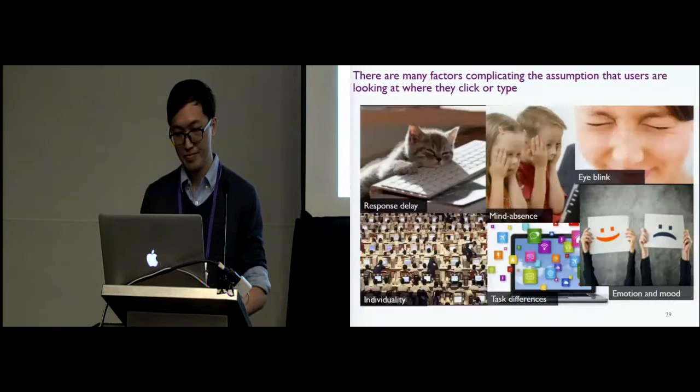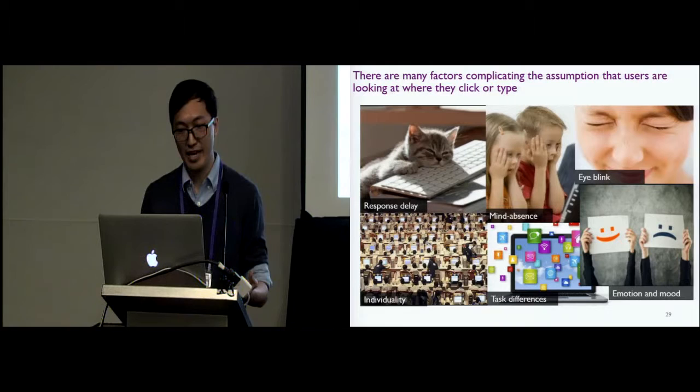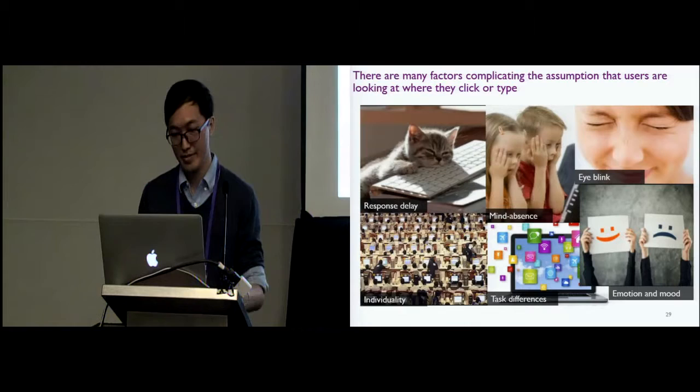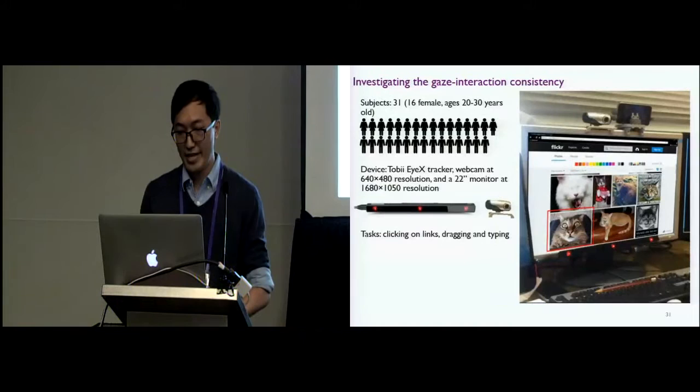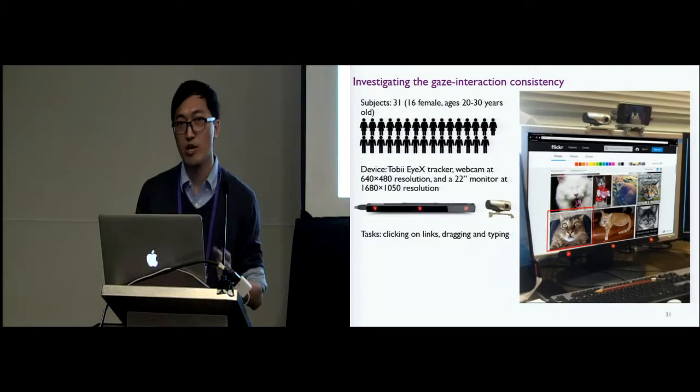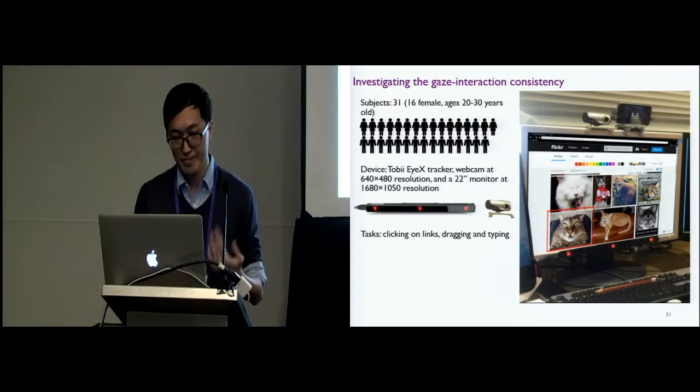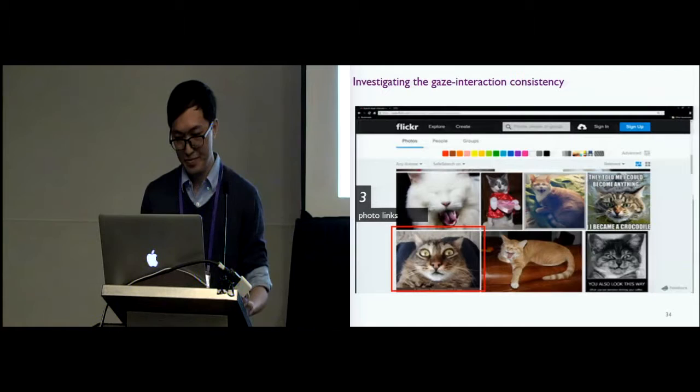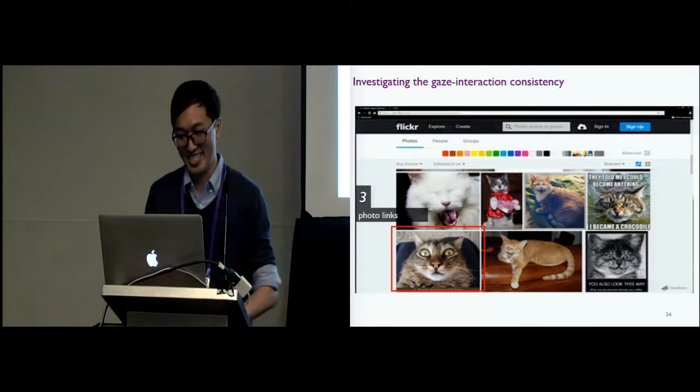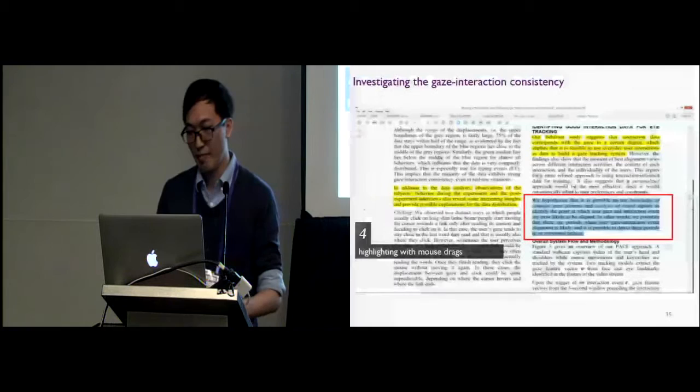Previous work shows, and also common sense, that there may be many factors complicating the assumption that the user are looking at where they click or type. The question is how. How do these factors affect the gaze interaction consistency? We ran an experiment to find out. We recruited 31 subjects. Their gaze position were recorded using a Tobii eye tracker and their facial image by a webcam. And we asked them to perform some everyday interaction tasks, such as clicking on long links, short links, and photo links. Yes, I intended to stay on this page for a little bit longer, because it's just a cat. And we also asked them to highlight text with mouse drags and type.